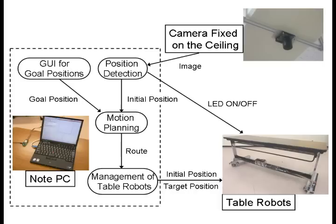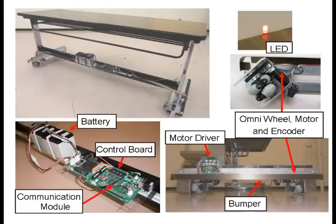Path planning is then performed from the detected position to the desired position given in advance. Finally, the robot moves to the desired position following the motion commands received wirelessly from the computer.